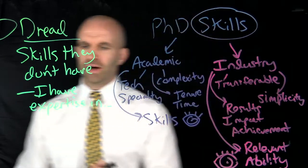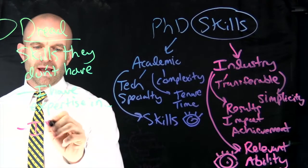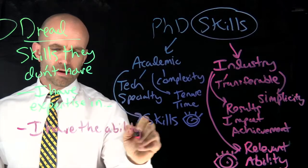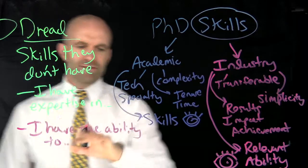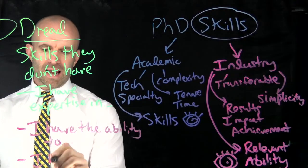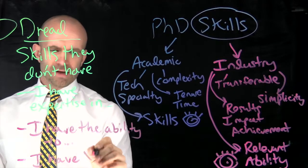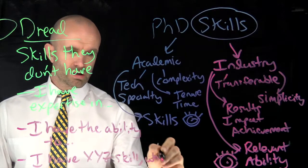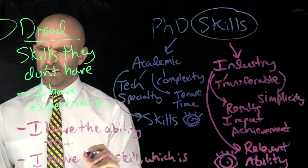So you can say instead, let me switch back over here. You can say, I have the ability to, or I have the ability to learn. You could also say, I have X, Y, Z skill which is relevant.